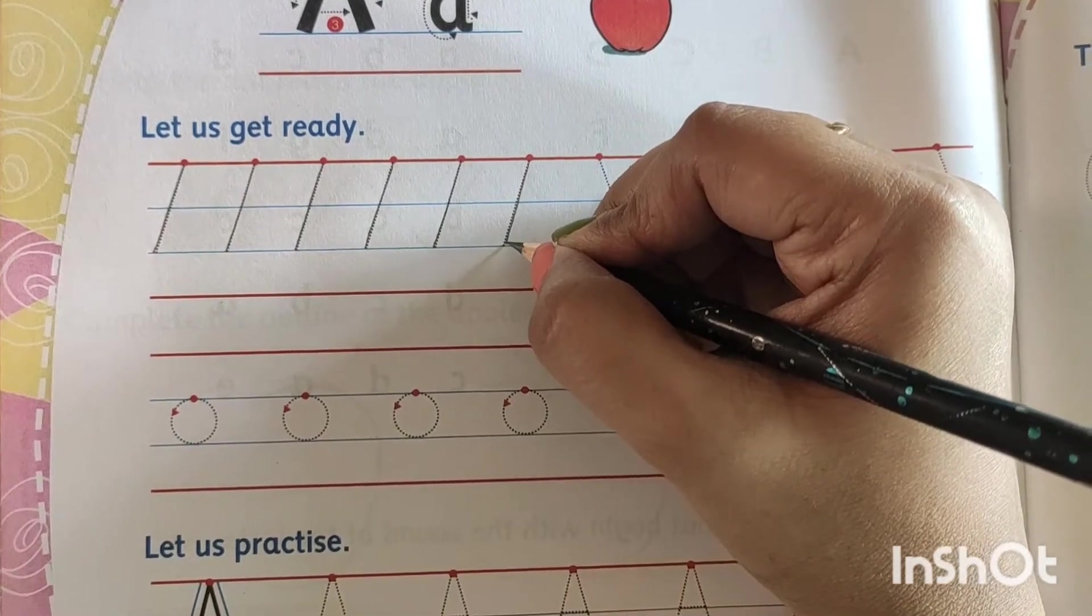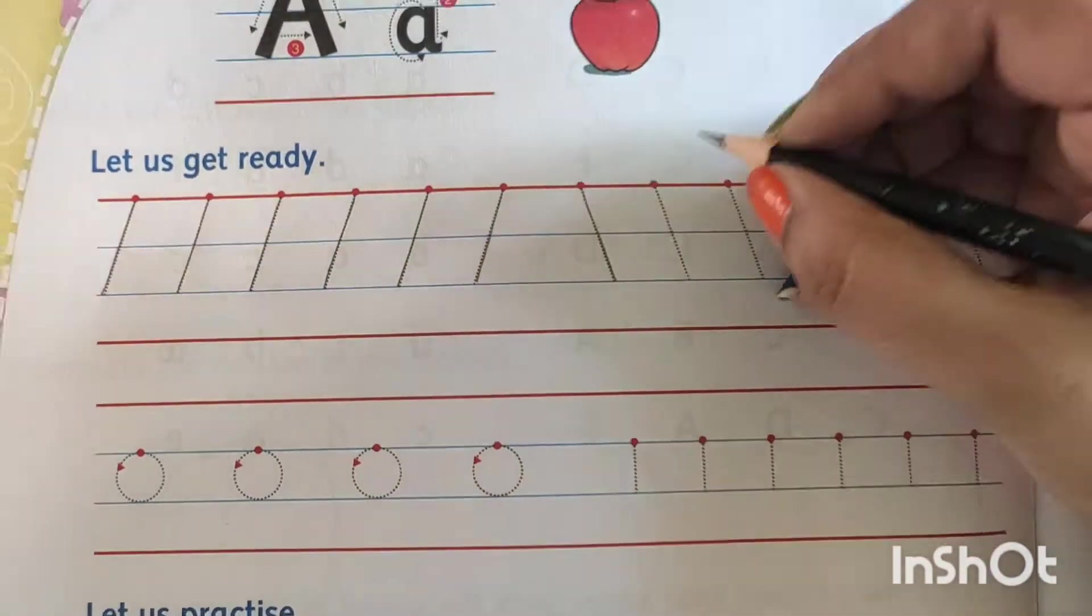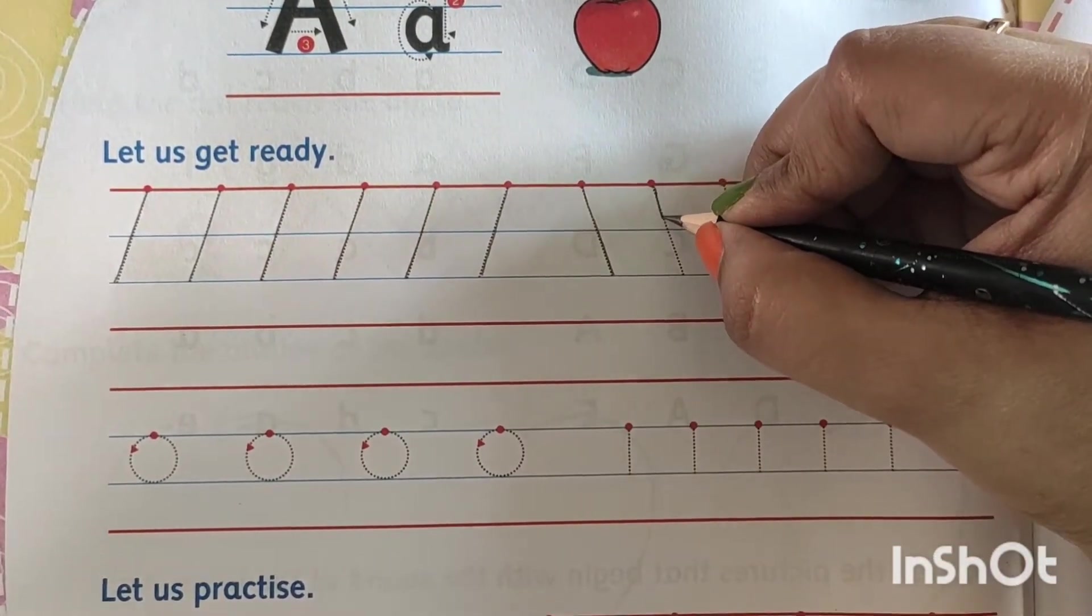And do with your sharp pencil. Another slanting line, opposite slanting lines.